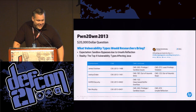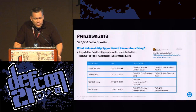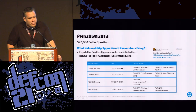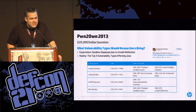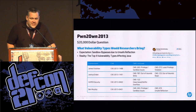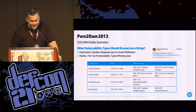One of my favorite quotes from running Pwn2Own: we asked Vupen Security if they were going to bring an unsafe reflection vulnerability. Chaouki said 'Of course we've got unsafe reflection vulnerabilities, but we wanted to bring you something interesting' — so they brought a heap-based buffer overflow.